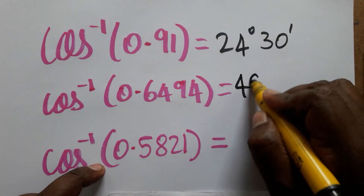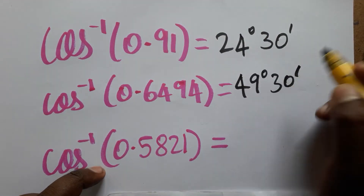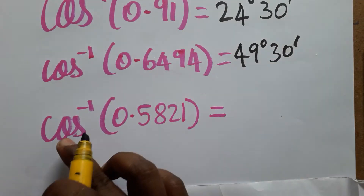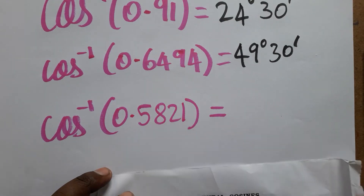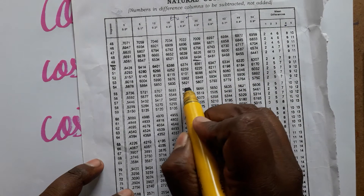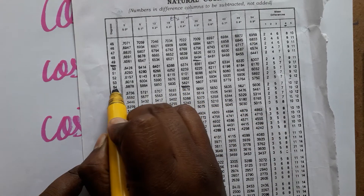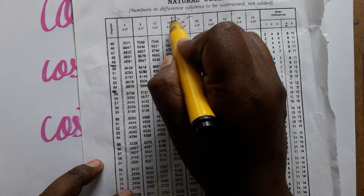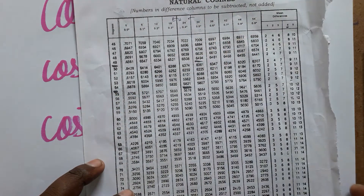So cosine inverse of 0.6494 gives 49 degrees 30 minutes. The next one, cosine inverse of 0.5821 — searching in the table for 0.5821, I find it corresponds to 54 degrees 24 minutes.